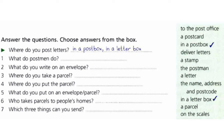Now we have some exercises. Let's check them together. Number four: answer the questions — choose answers from the box. We have a green box here. We need to find the answers in this box for the questions. Like: where do you post letters? In a postbox or in a letterbox.